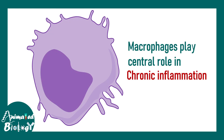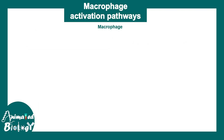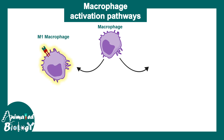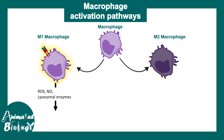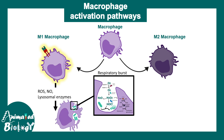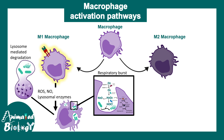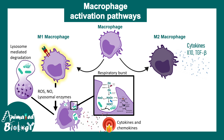Now let's talk about how macrophages play a vital role in chronic inflammation. There are two kinds of inflammation — acute, meaning short-term and sudden, and chronic, meaning long-term and prolonged. There are two types of macrophages: M1 and M2. M1 macrophages are pro-inflammatory; they secrete ROS and lysosomal enzymes, and also secrete cytokines and chemokines that attract more immune cells to the site of infection. M2 macrophages, on the other hand, secrete anti-inflammatory cytokines such as interleukin-10 and TGF-beta.